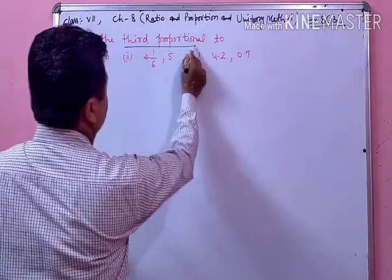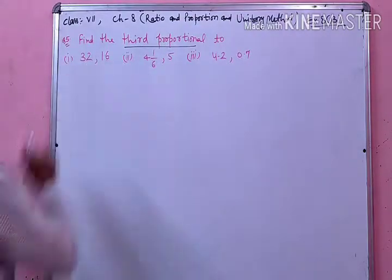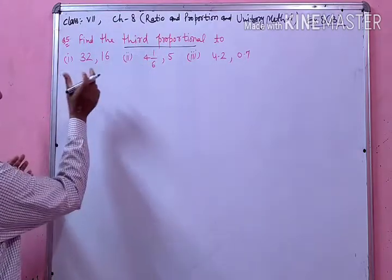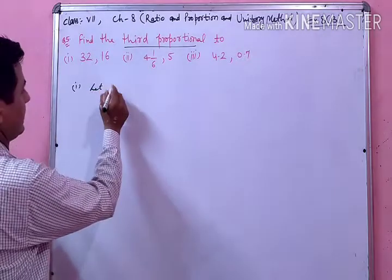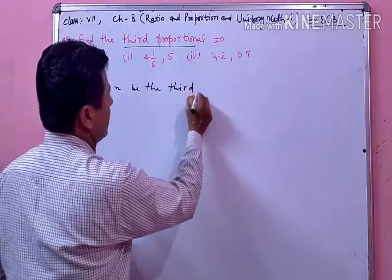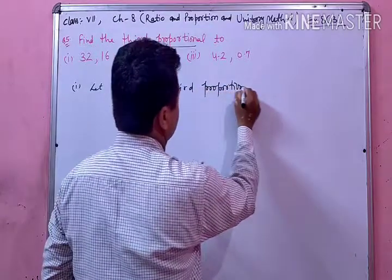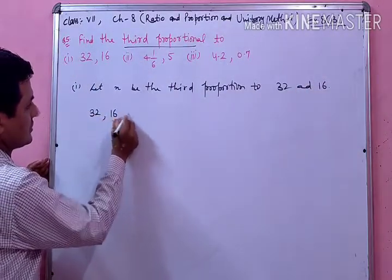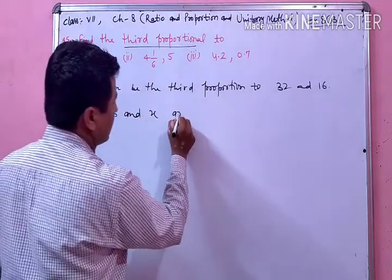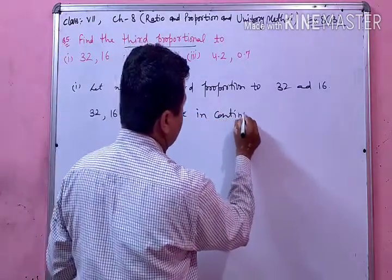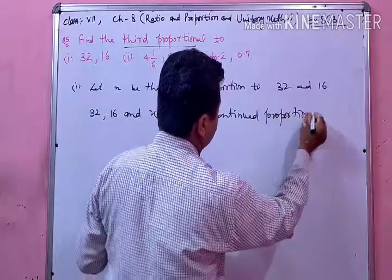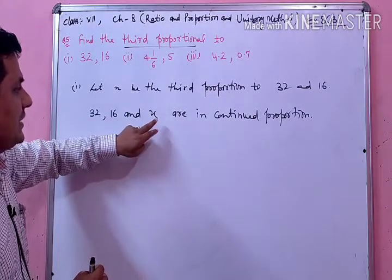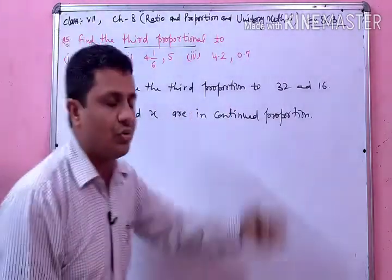Find the third proportional to 32 and 16. So, 32, 16 and x are in continued proportion. Here I will show you the third proportional to 32 and 16. So 32, 16 and x are in continued proportion.